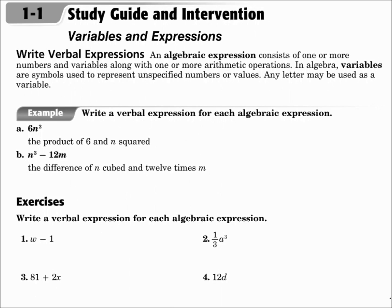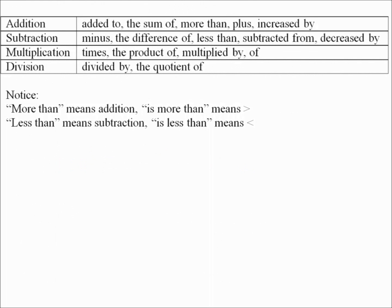An algebraic expression looks like math — numbers and variables. For example, n cubed minus 12n. A verbal expression looks like a sentence with words written out, like this: the difference of n cubed and 12 times m. Take a minute to write this chart out, because it tells you what verbal phrases are used with each mathematical operation.